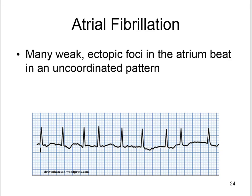Atrial fibrillation involves rapid, random, ineffectual, and irregular contractions of the heart at greater than 350 beats per minute. There are many weak ectopic foci in the atria beating in an uncoordinated pattern. This produces a coarse baseline and an irregular distance between contractions, which characterizes the rhythm.